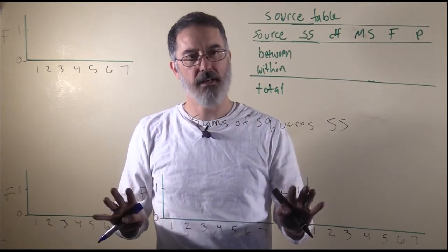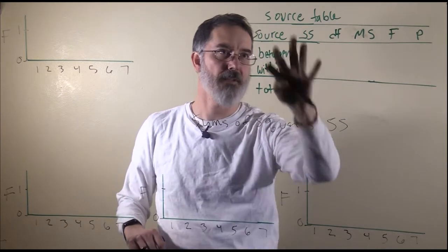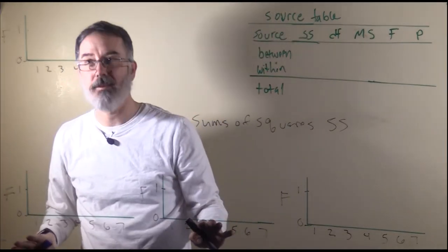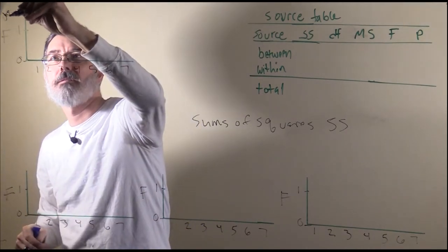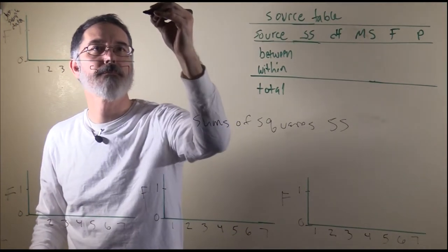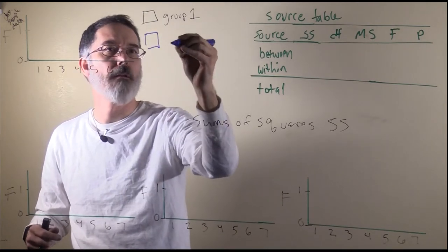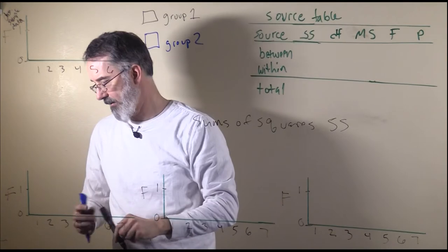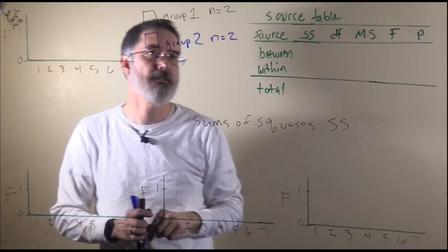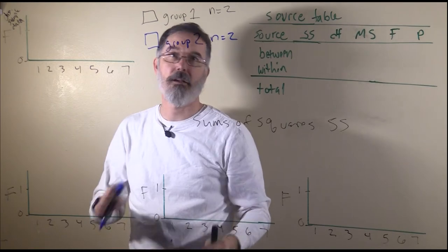I wanted to do a really simple example to illustrate how it works. I have the source table ready to fill in, and with the sums of squares approach you start with the source table and fill it in as you go. I have created four different distributions — these are our observed sample data. I am only going to have two groups, and for each group I am only going to have two people, so n equals 2 for both. The sums of squares approach is computationally intensive, so a small number of data points means we do not have to spend a lot of time on calculations, and with fewer data points it is actually easier to visually understand what is happening.